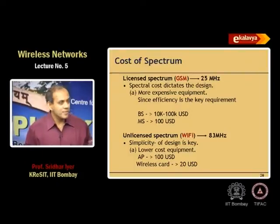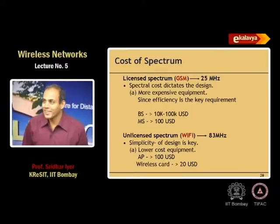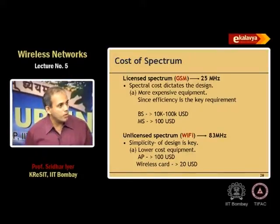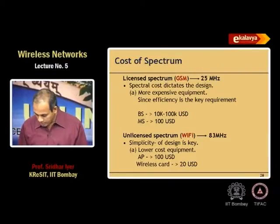We are not paying for the spectrum — it is free. So if it is free, it does not matter if you waste some. That is the philosophy: efficiency is not so important because you have a lot of bandwidth. In GSM you had 25 megahertz, whereas here you have 83 megahertz to play with. Later we will calculate the efficiency of the Wi-Fi system once we understand how it operates.